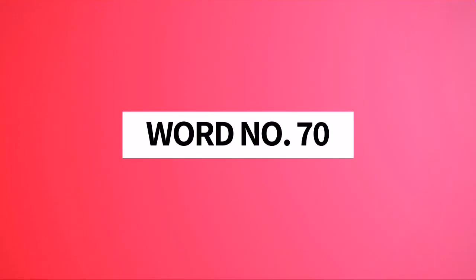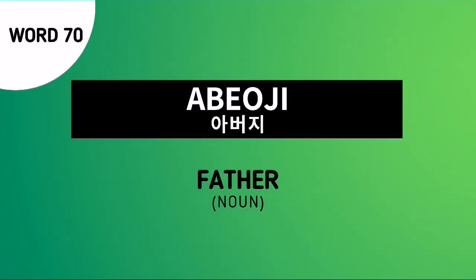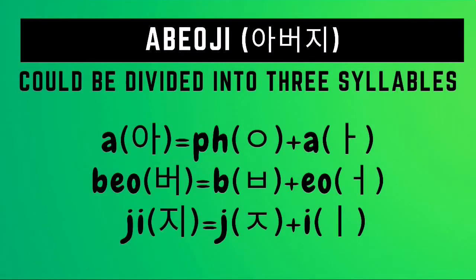Word number 70: Abeoji. Abeoji is the Korean noun for father. The word Abeoji can be divided into three syllables: A-beo-ji. A is just the sound of A itself with the placeholder i-eung at the first position of the syllable. Beo is the combination of the sounds of B-ieup and O. While ji is the combination of the sounds of Chiyot and I.